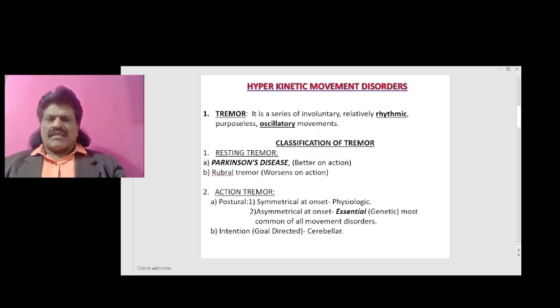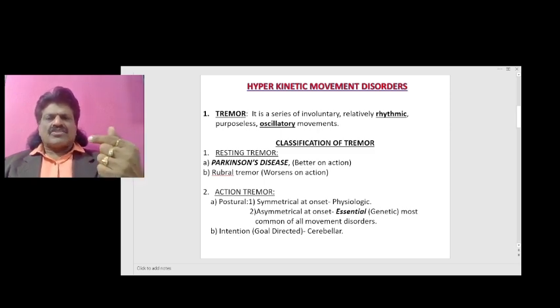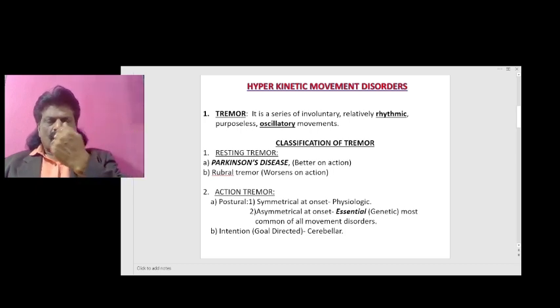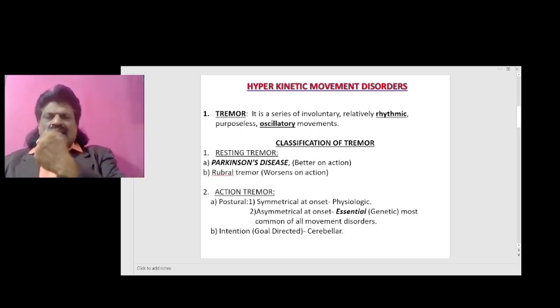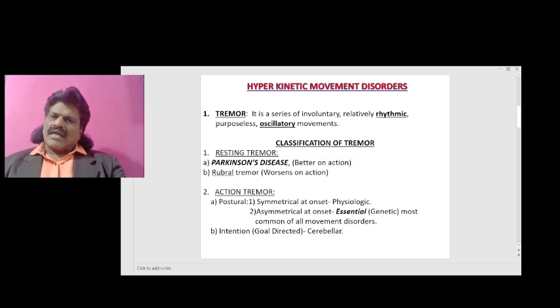Intentional tremor is a goal-directed tremor seen in cerebellar disorders. There is mild tremor at baseline, but as you approach the target, the tremor worsens — the classic example is cerebellar tremor.